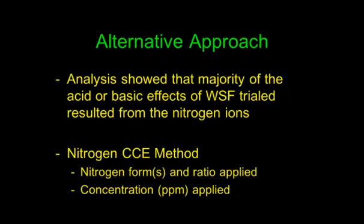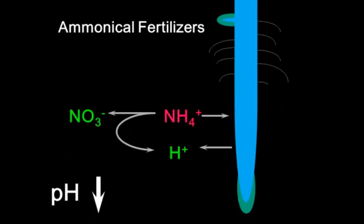You're looking at nitrogen forms and ratios applied as well as the concentration. Most of your acidification or increase in pH is due to nitrogen. Ammoniacal nitrogen fertilizers will tend to drive the pH down, because when ammonia is taken up by the plant, hydrogen ions are extruded. The more hydrogen ions in solution, the lower the pH. Additionally, ammoniacal nitrogen can go through nitrification, where it's converted into nitrate nitrogen — this also produces hydrogen ions, further lowering pH. So ammoniacal nitrogen tends to be acidic.